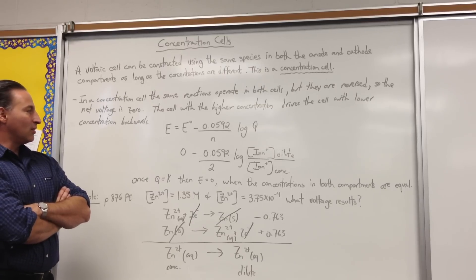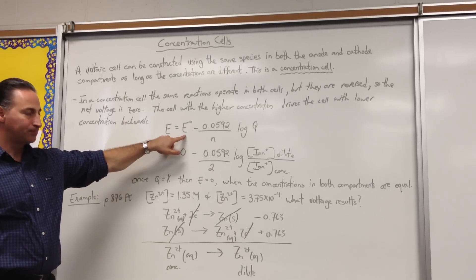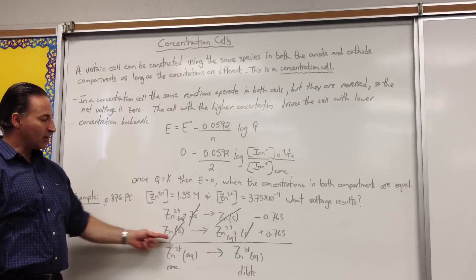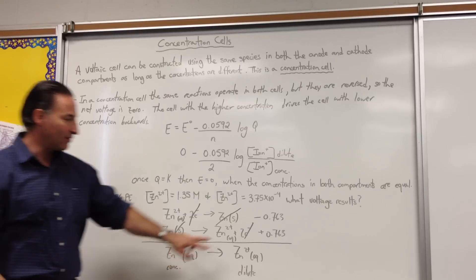In a concentration cell, E naught is equal to zero, because you're using the same reaction. One cell is going forward, and the other cell is going backwards, so the net voltages cancel out.